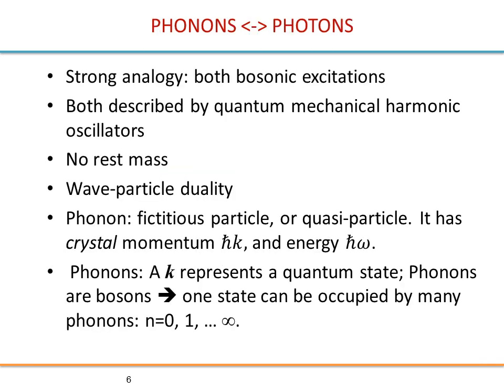The excitations of these oscillators are phonons; the dispersion relation is often called the phonon dispersion curve. ℏω is the quantum of a phonon; k is a quantum number reflecting the translational symmetry of the crystal. Comparing phonons to photons: both are bosons, both are described by quantum mechanical harmonic oscillators, with no rest mass and wave-particle duality. Phonons are quasi-particles with crystal momentum ℏk — as opposed to pure momentum for a free particle — and energy ℏω. Since phonons are bosons, one state can be occupied by many phonons.